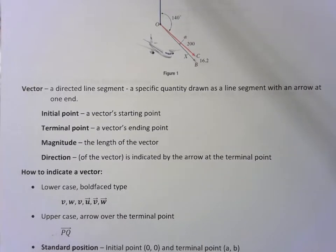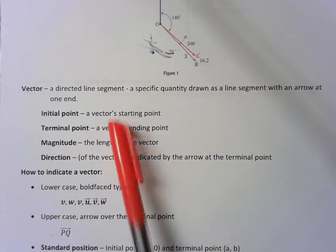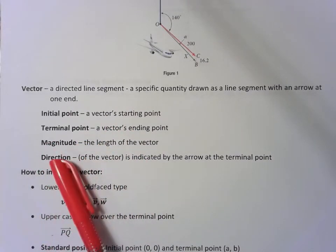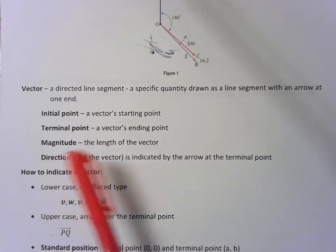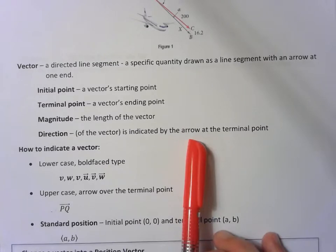A vector is a directed line segment or a specific quantity drawn as a line segment with an arrow at one end. The initial point is where the vector starts. The terminal point is where the vector ends. The magnitude is the length of the vector. The direction is indicated by the arrow at the terminal point.